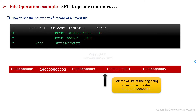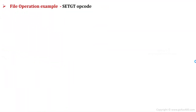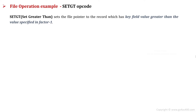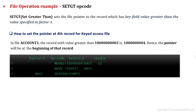Now we will discuss the SETGT opcode. SETGT, or Set Greater Than, sets the file pointer to the record which has a key field value greater than the value specified in Factor 1. For example, to set the file pointer at the end of the third record, we use SETGT. First we declare a variable, pass the key value of the third record into it, then use this variable in Factor 1 with SETGT. When we run the statements, it sets the file pointer at the end of the third record.